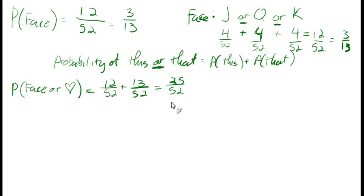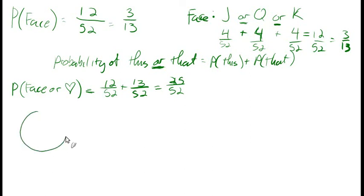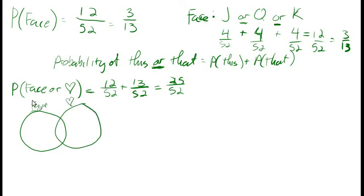But here's the issue you may not realize: this probability is actually too high. Take a moment and think about why. Because if we actually counted them out — face cards or hearts — when we count out the face cards and then go to count out the heart cards, what we'll find is a little bit of overlap. If we count face cards and then count heart cards completely forgetting we already counted face cards, we're going to count three cards twice.